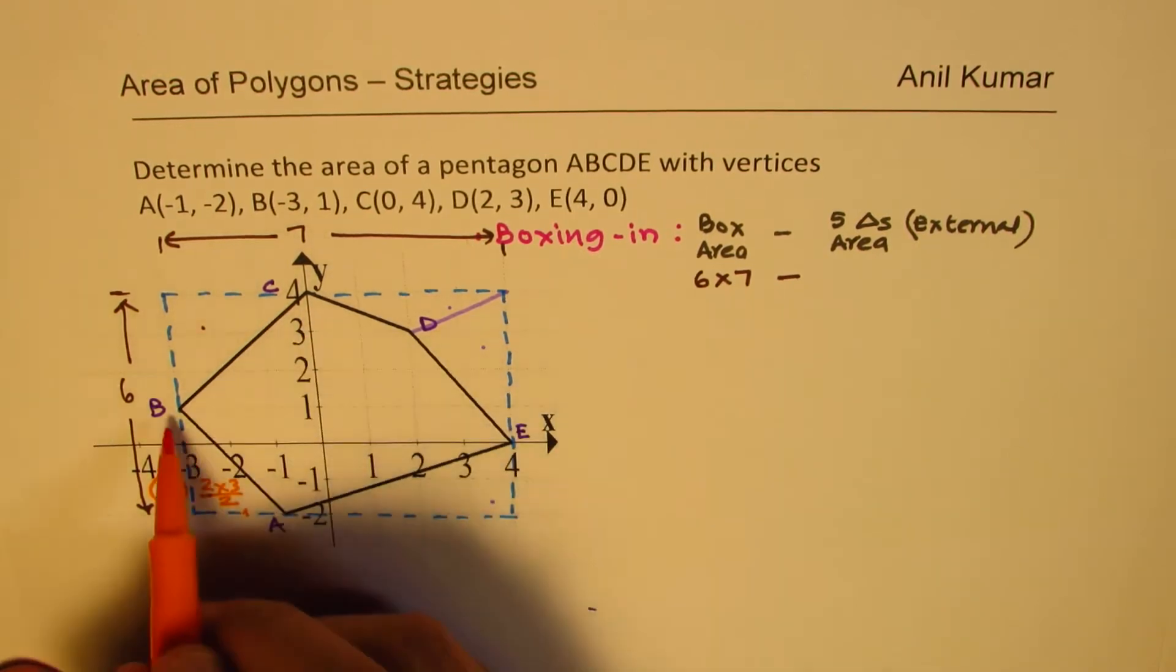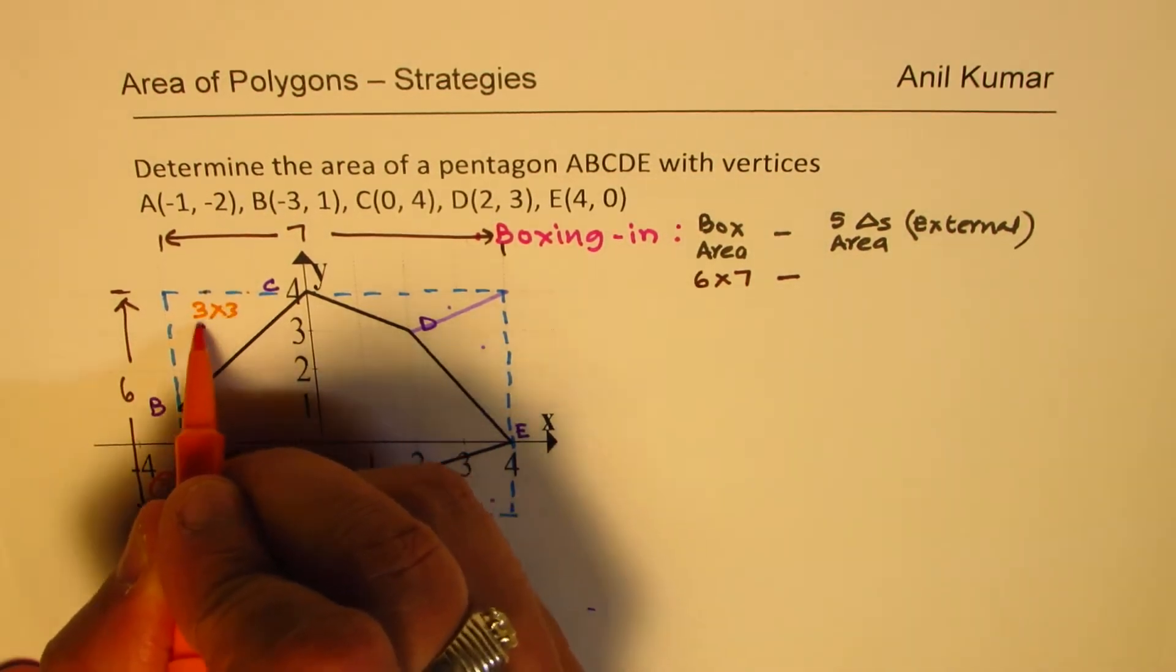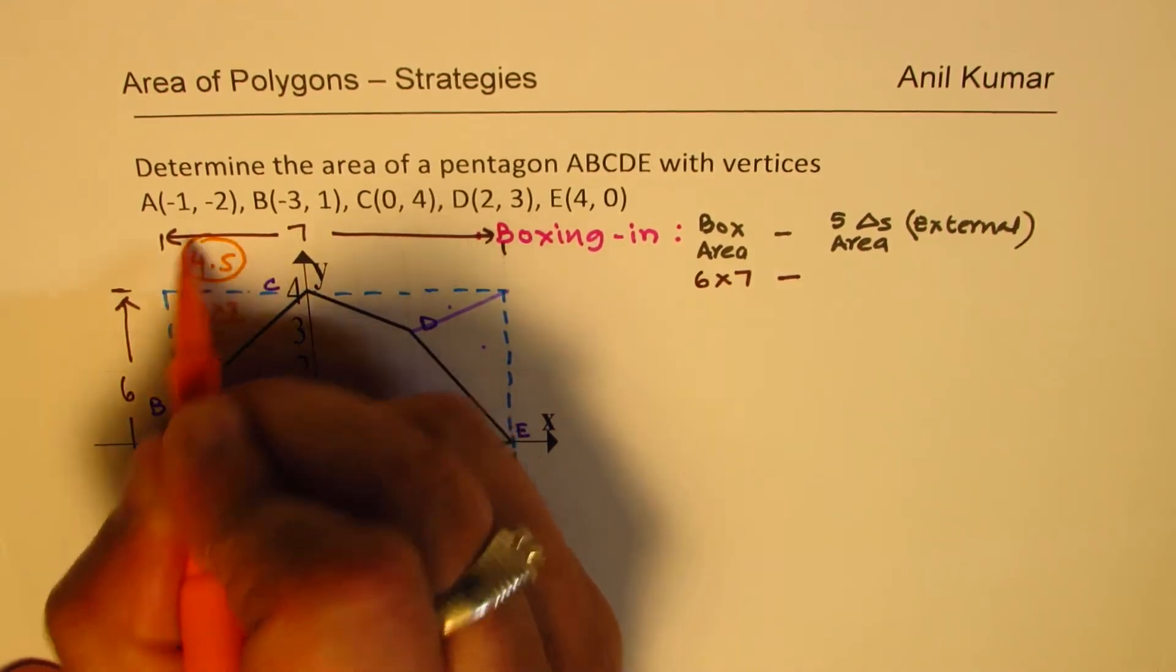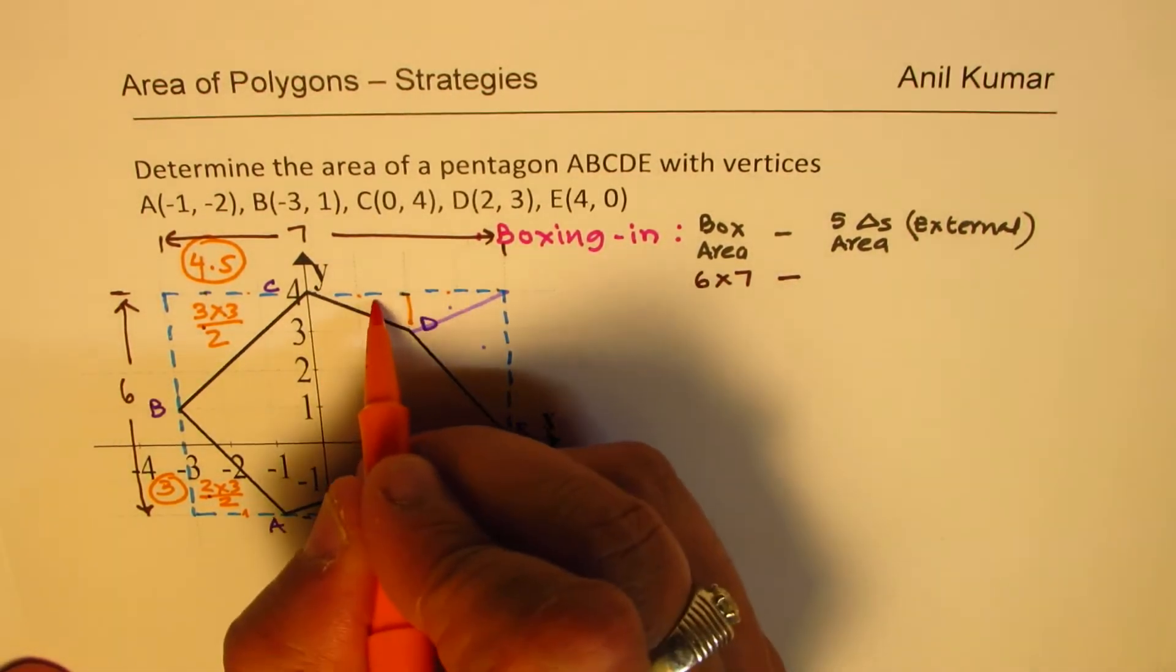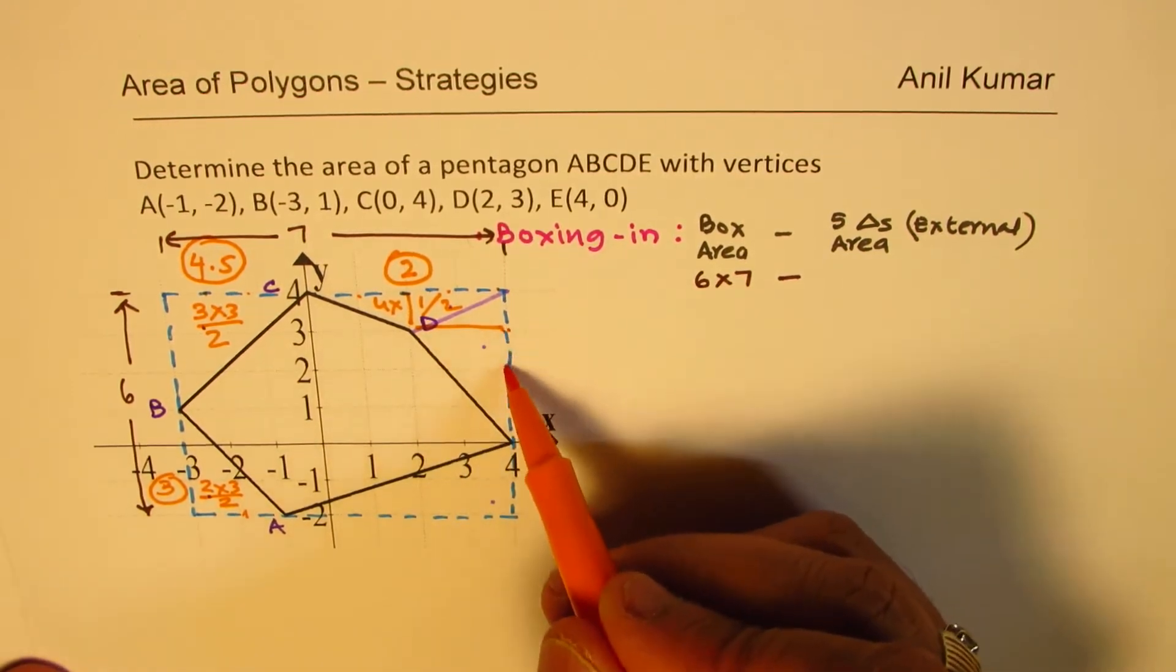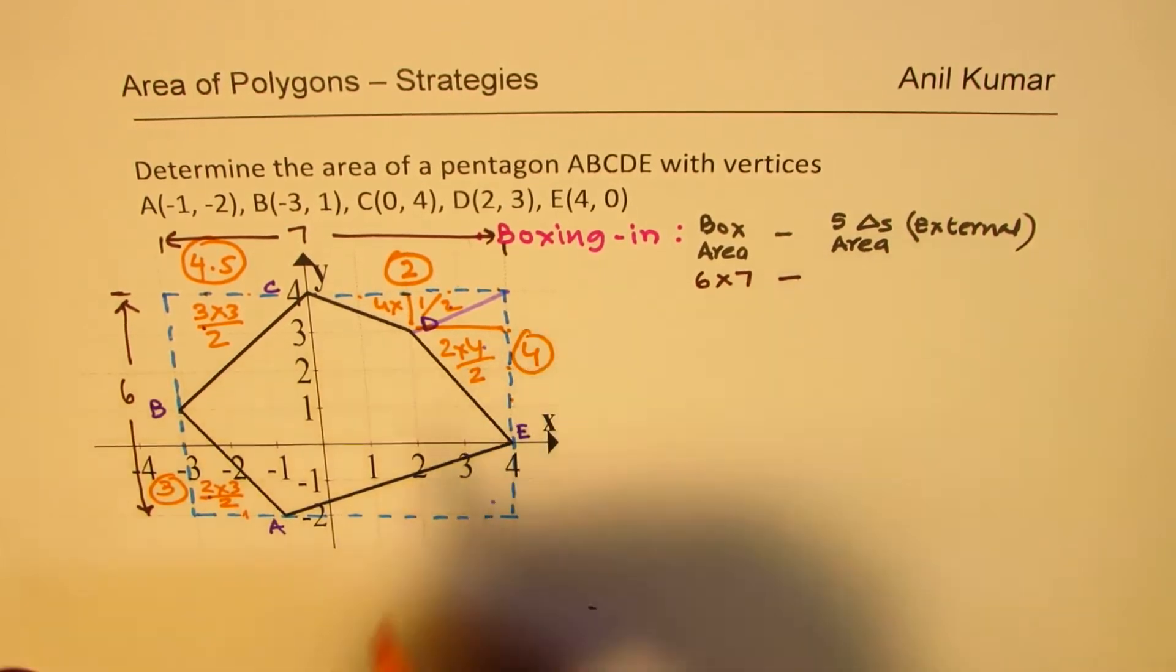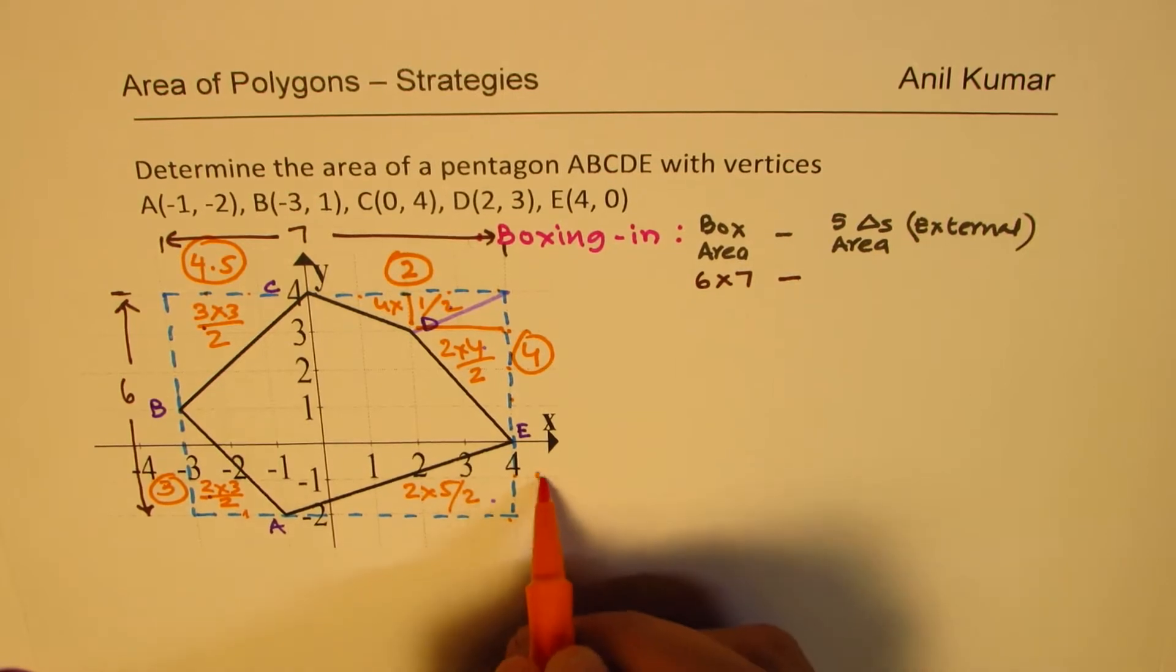This triangle, we have 3 by 3 divide by 2, half base into height, 9 divided by 2, 4.5. Next one, height of 1 unit and 4 units, so it is 4 times 1 divided by 2, so it is 2 units. Here, this dimension is 2 and 4, so it is 2 times 4 divided by 2, so that gives you 4 units. And the last one here is 2 units down, so 2 times 5 divided by 2 means 5 units.